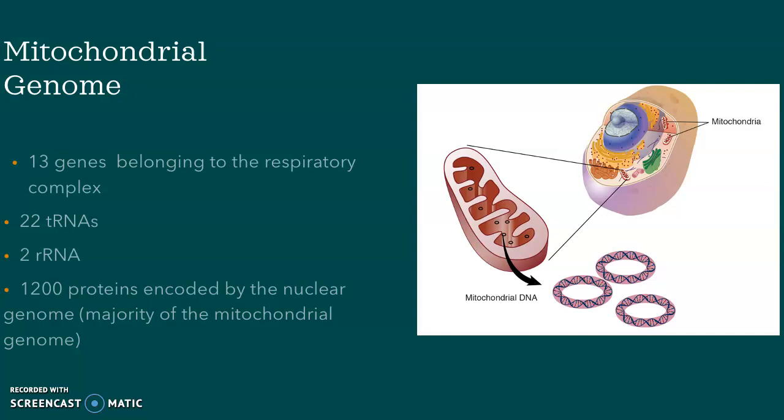There are two genes that code for different ribosomal RNA molecules. The nucleus now makes about 1,200 proteins that are used by the mitochondria, so over this two-billion-year period they have become reliant on each other and one can't live without the other. A lot of the mitochondrial genes actually got transported to the nucleus, but it still makes a few of its own.